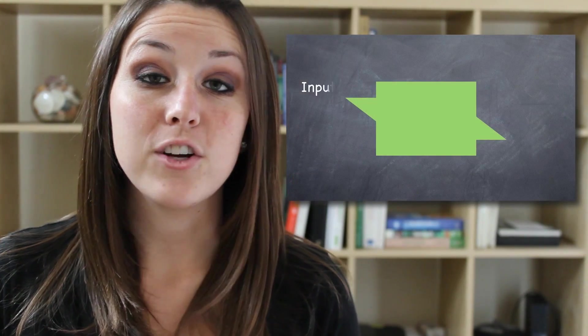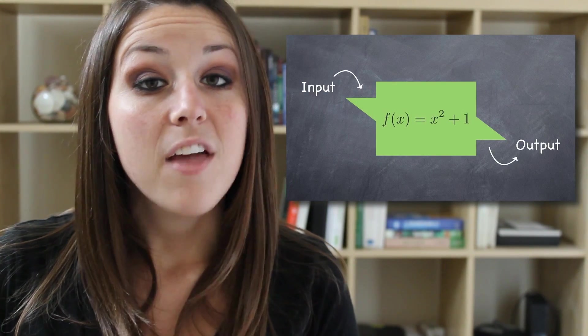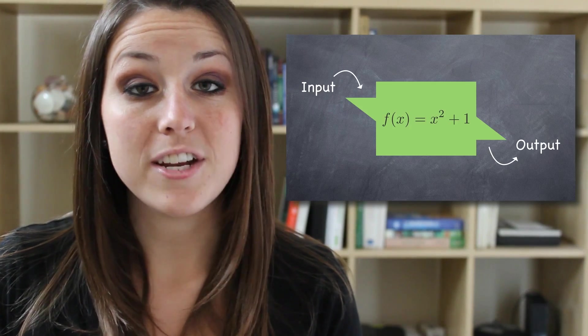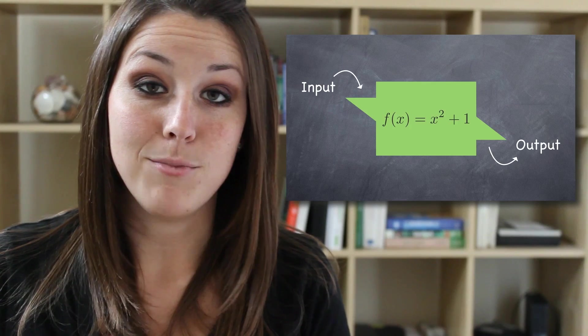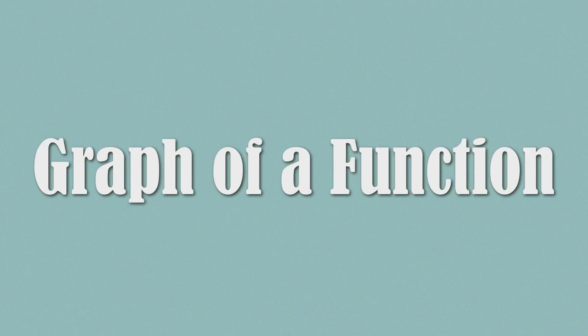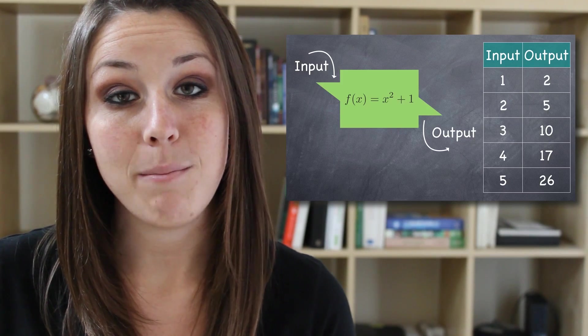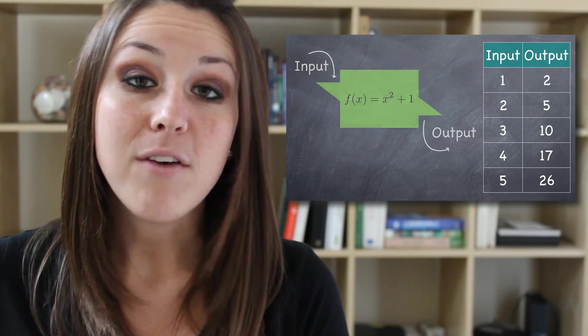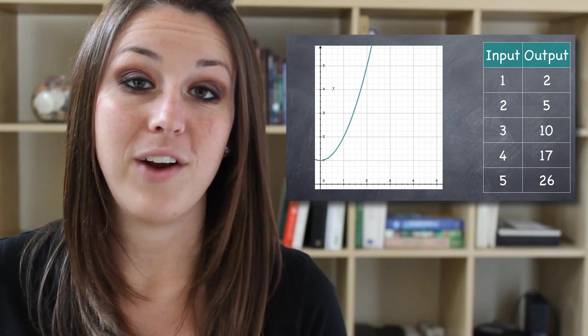Oftentimes we like to think about a function machine that has an input side and an output side. The machine itself is the equation that relates x and y. When you put an x value into the input side of the machine, it will calculate exactly one y value and spit it out on the output side of the machine. Because of this one-to-one relationship, you can think of a function as being made up of its entire set of input-output pairs. Each pair is one point on the graph of the function.